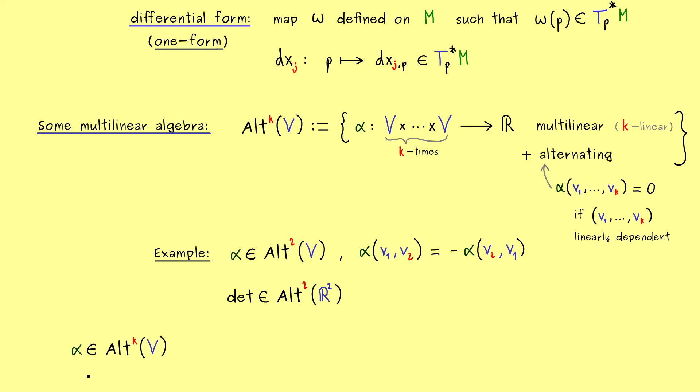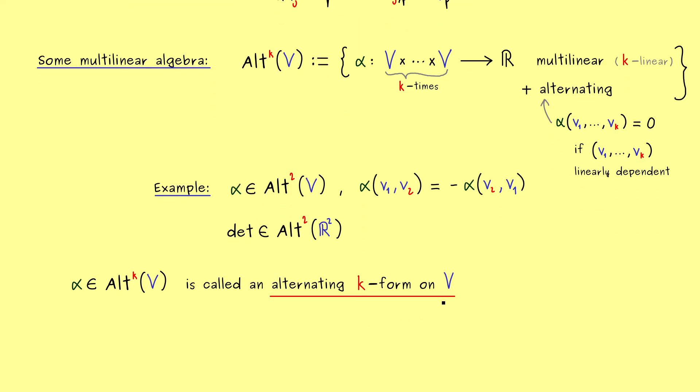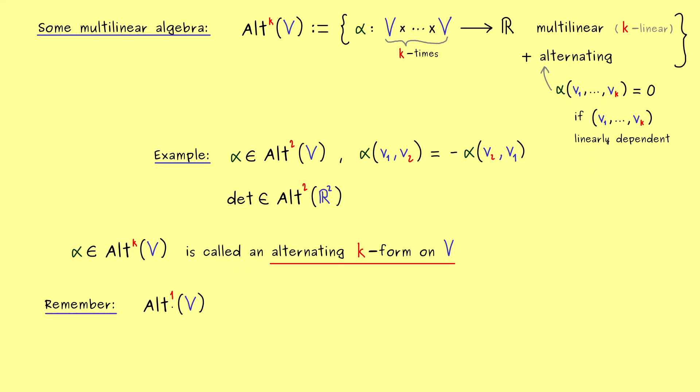Usually one calls such an alpha a k-form. In order to make it not too confusing, I will call it an alternating k-form on V. We emphasize the alternating and the on V to make clear this is the multilinear algebra definition of a k-form. At this point you already know alternating one-forms on V. These are given by the dual space. Alt^1(V) is nothing else than V*, the dual space as we defined it before. For one-forms, the alternating part is not seen at all.